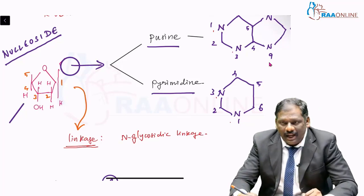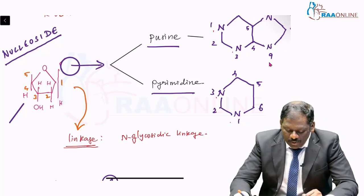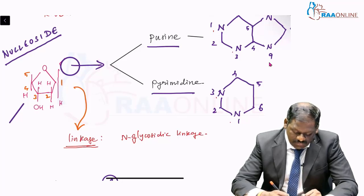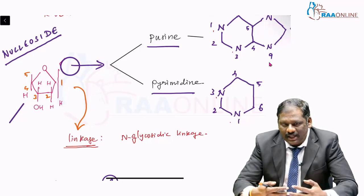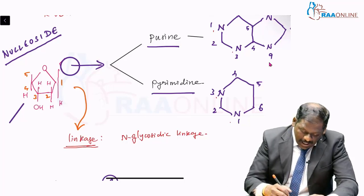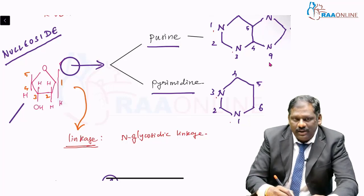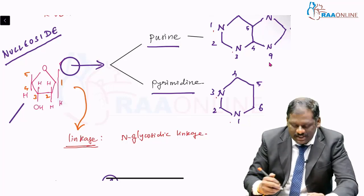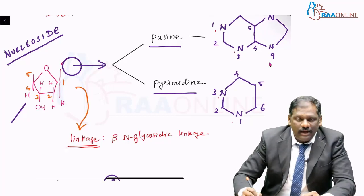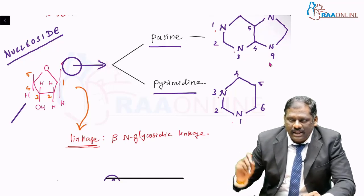In case of purine, it will be N9. And in case of pyrimidine, it will be N1. This N9 of purine combines with the first position here by a glycosidic linkage, and this glycosidic linkage is N-glycosidic linkage. And this sugar now has a beta configuration. So you call this whole linkage as beta N-glycosidic linkage.